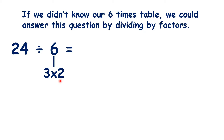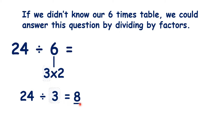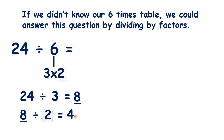So we could first work out 24 divided by 3, the first of our factors, to get 8. Then we could divide by 2, the second factor, to get 4. So 24 divided by 6 is 4.